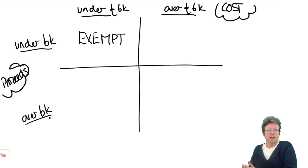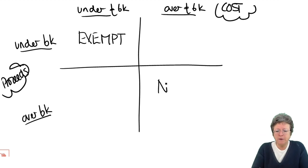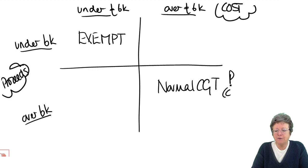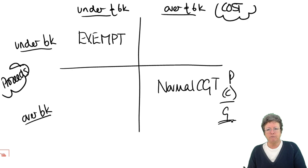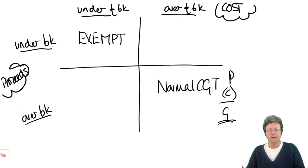If everything is over £6,000, it's outside the scope of the chattels rules, and then it would be the normal CGT computation: proceeds less cost equals gain. So if you own a very expensive camera — a Hasselblad, for example — worth £30,000 to £40,000, and you paid £20,000 for it, then proceeds less cost equals gain.